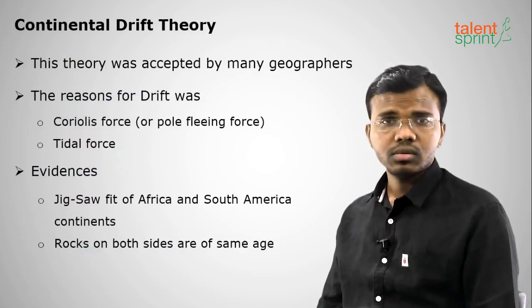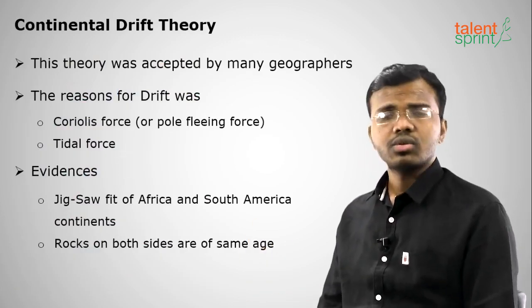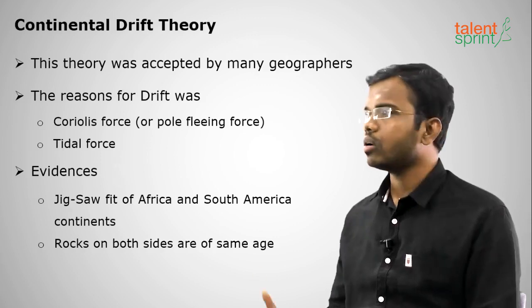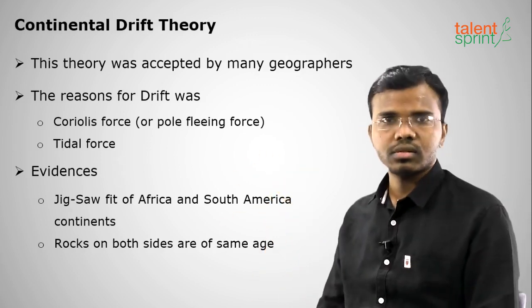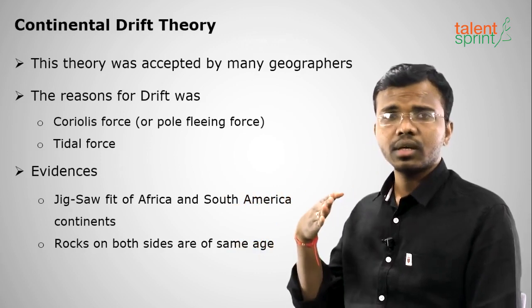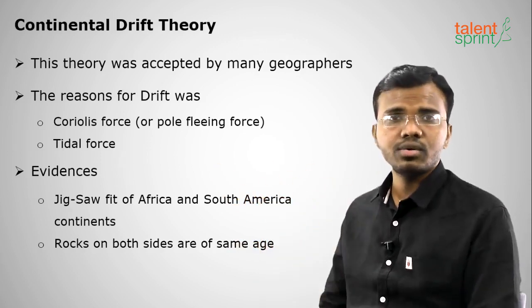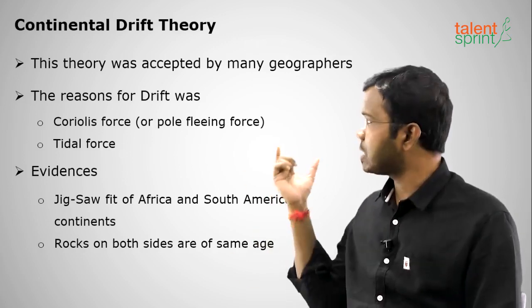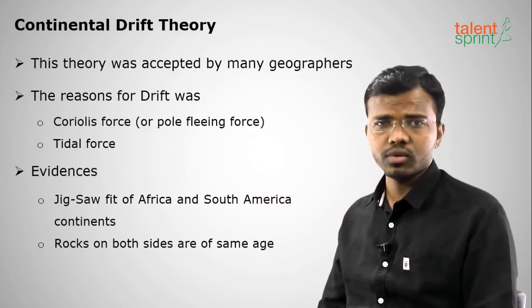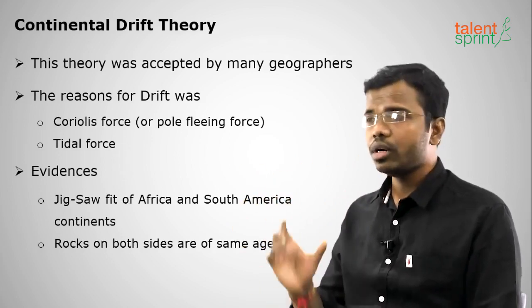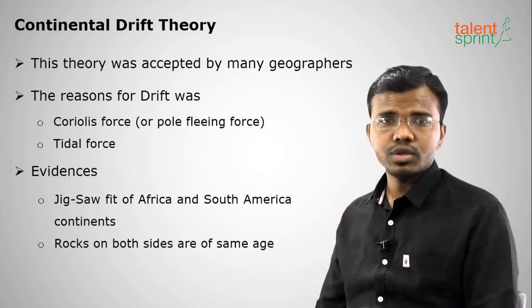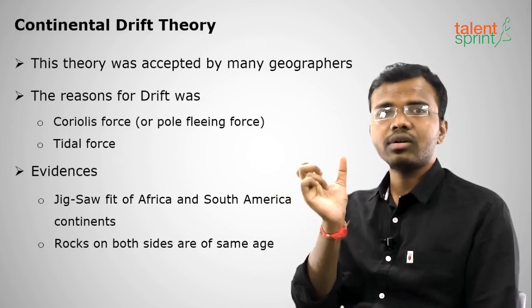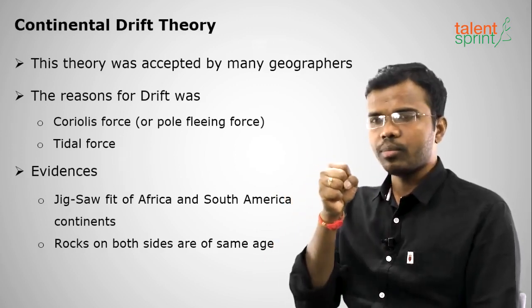This theory was accepted by many geographers. The reasons for continental drift are: first, tidal force — the tides of the ocean push the landmass causing it to divide into different parts. Second is the Coriolis force, also called pole-fleeing force. Earth rotates from west to east on its own axis.